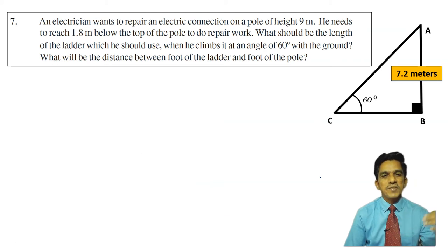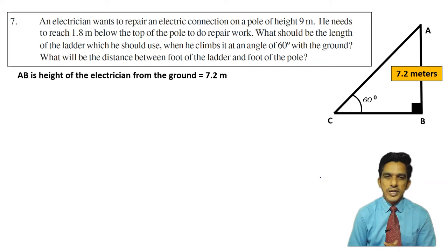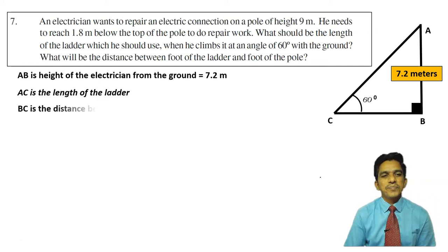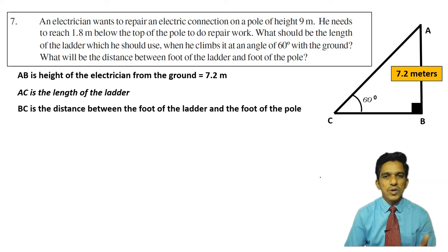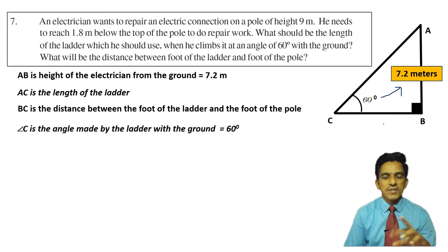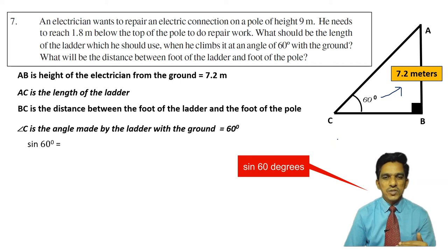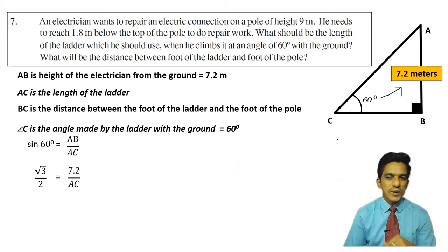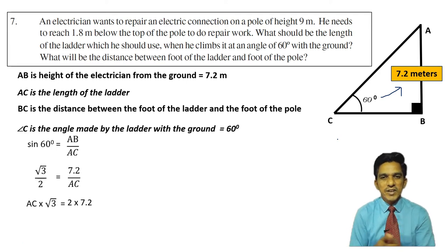Let us write the information. AB is the height of the electrician from the ground, that is 7.2 meters. AC is the length of the ladder. BC is the distance between the foot of the ladder and the foot of the pole. Angle C, or angle ACB, is the angle made by the ladder with the ground, which is 60 degrees. We have the angle and the opposite side. We need to find the hypotenuse as well as the adjacent side.